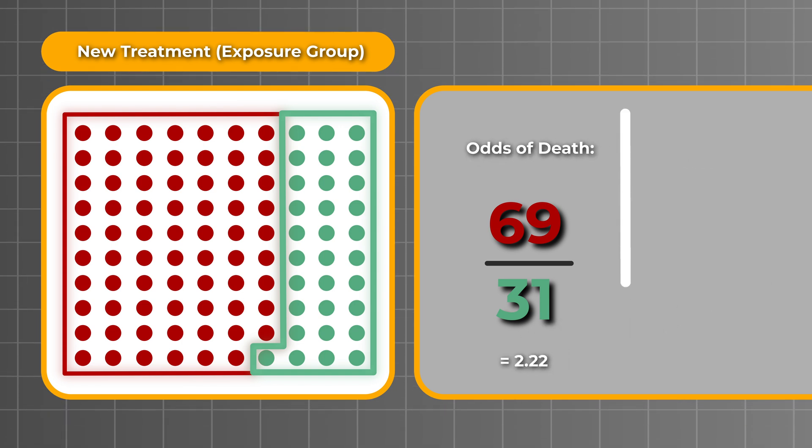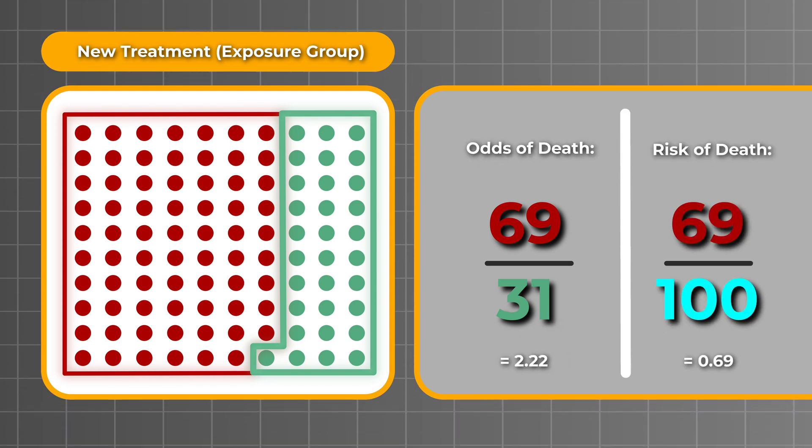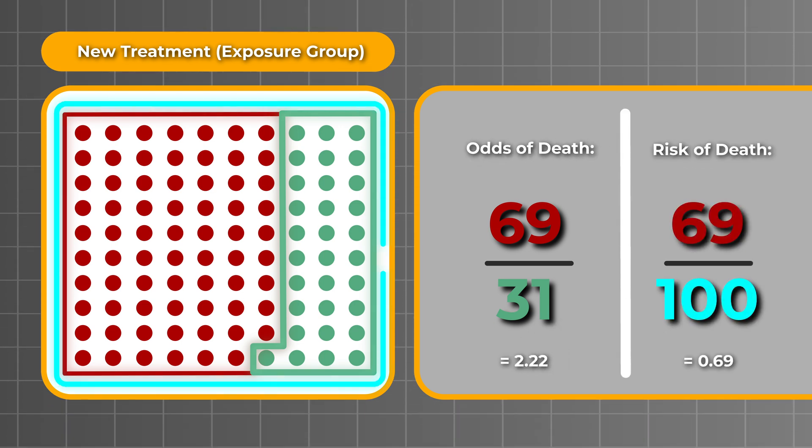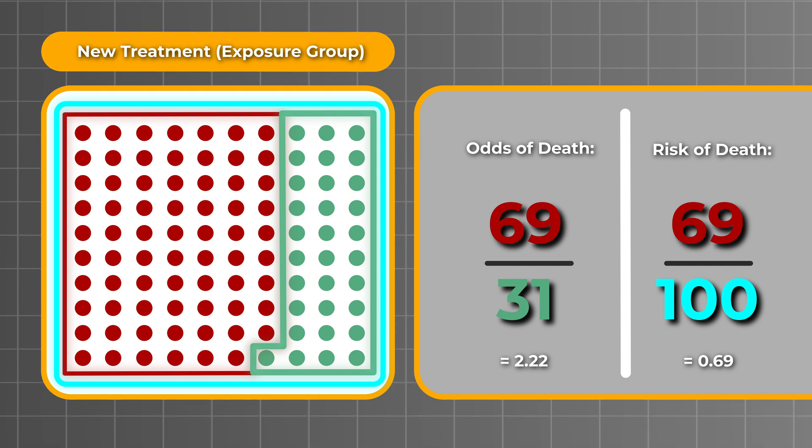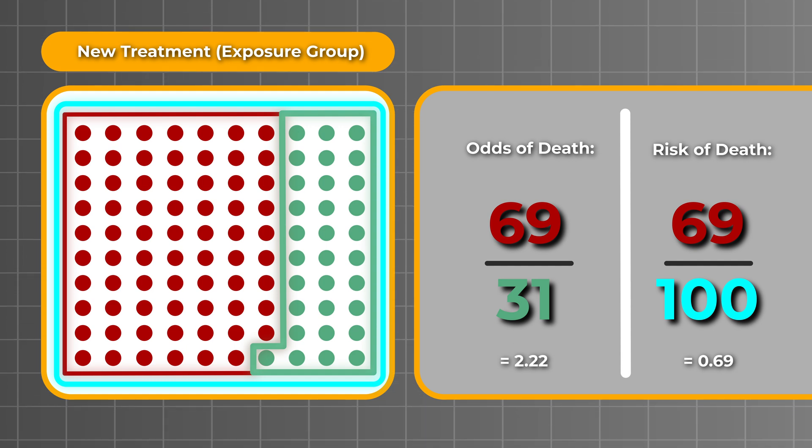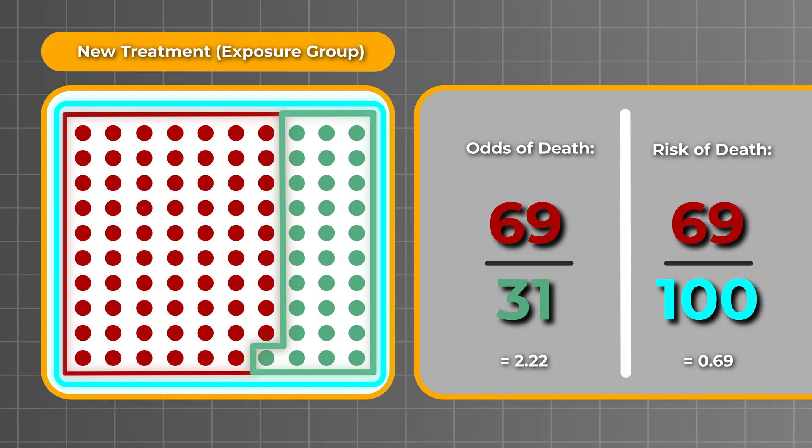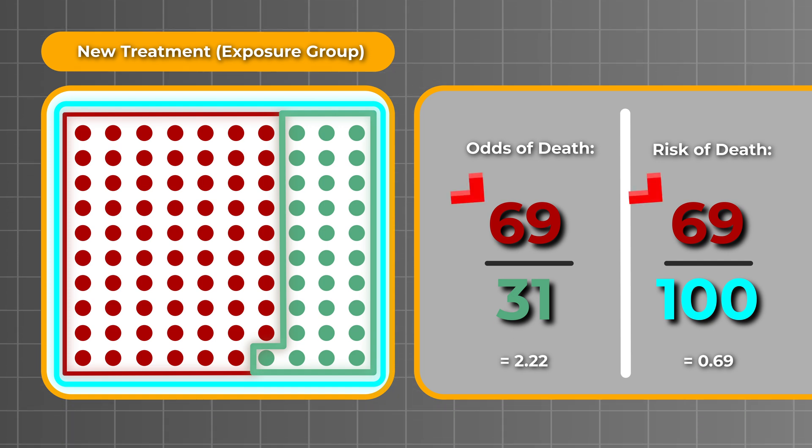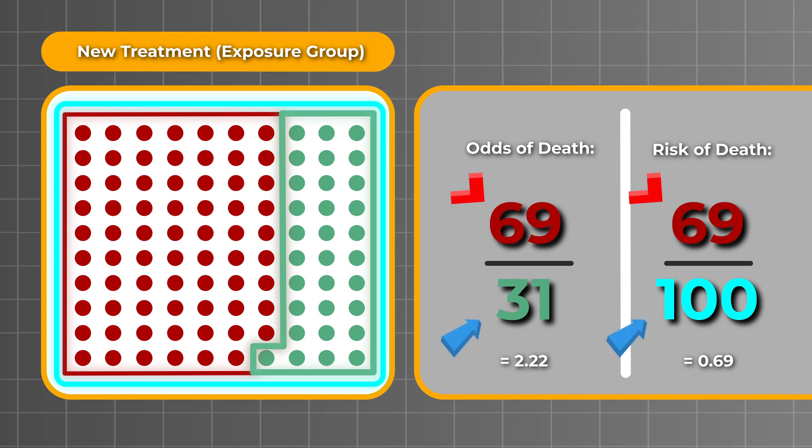Now, here's the key difference between risk and odds. For risks, the denominator is the total number of patients at risk at the start. But for odds, the denominator is the number of patients who didn't experience the event. So, while the numerator is the same for both, the denominator is where they differ.